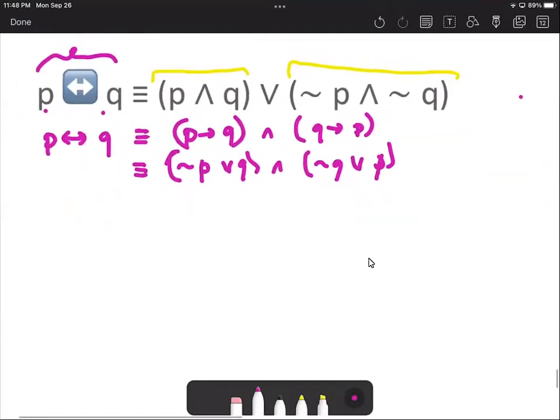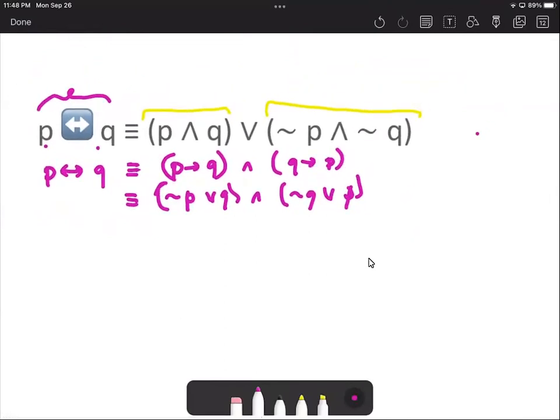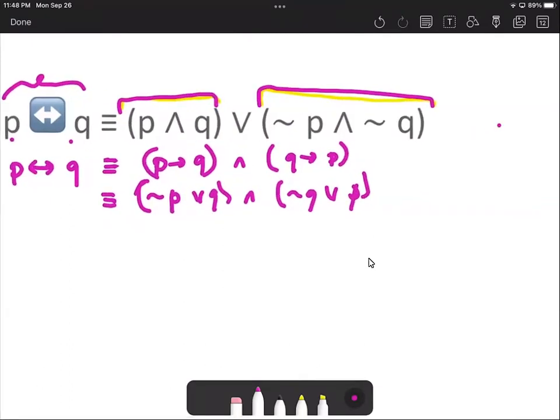What we can do next is to achieve these statements. But the question is how? We can actually apply the distributive law to this. This whole statement not p or q may be distributed to not q and p.